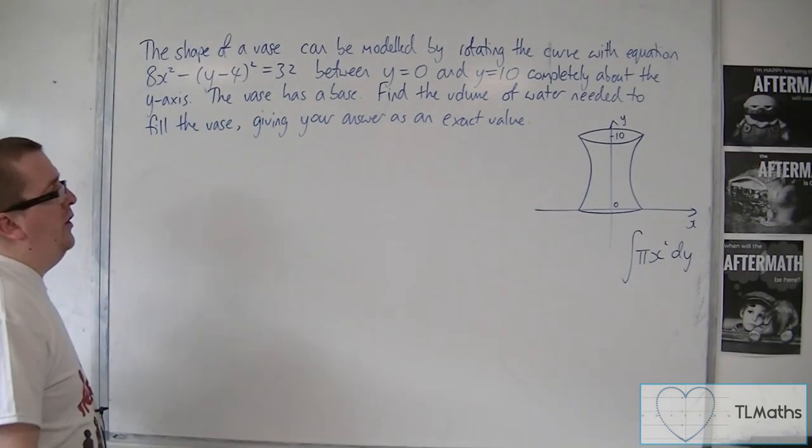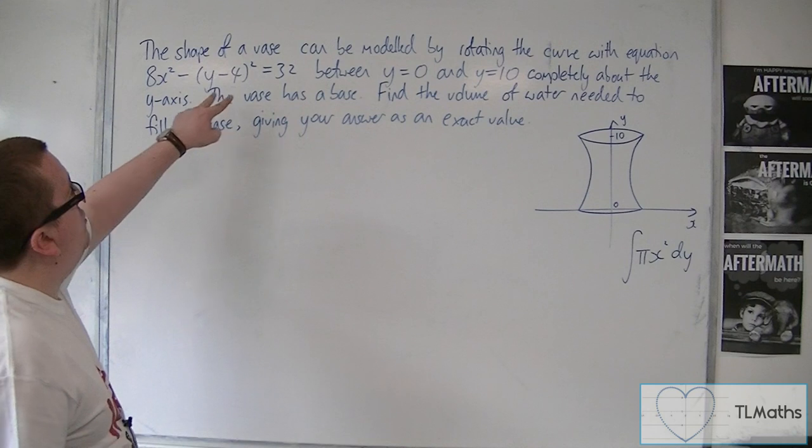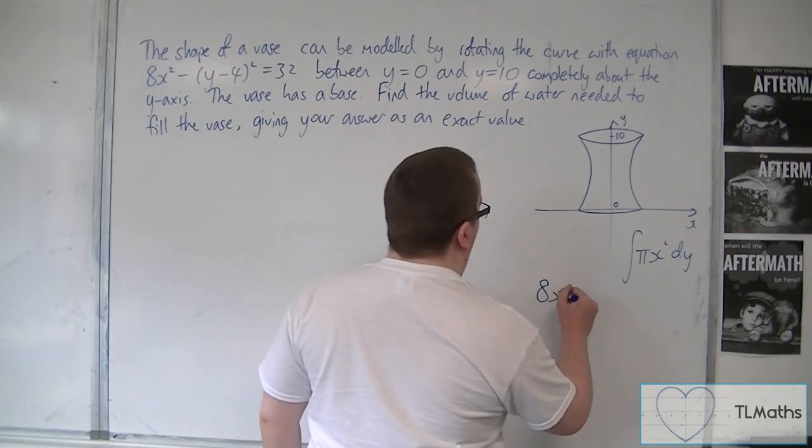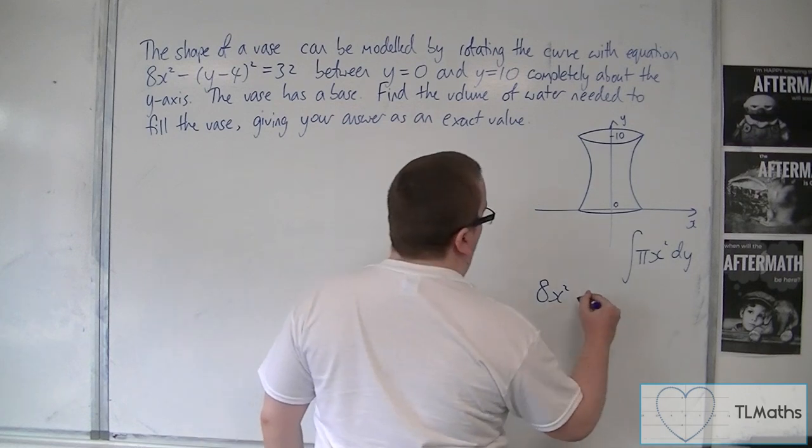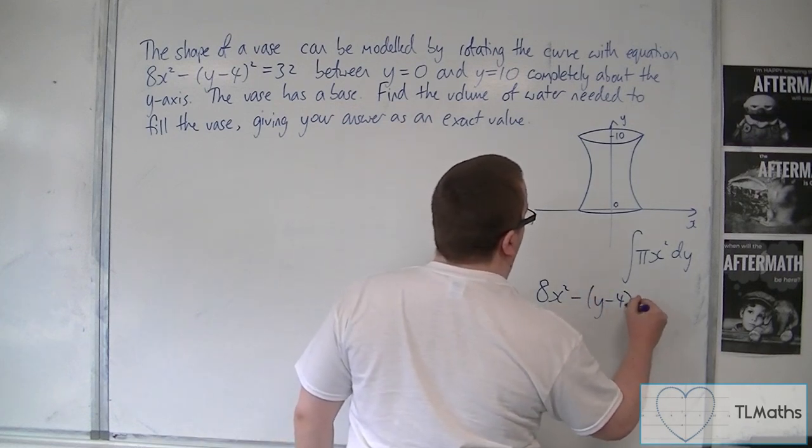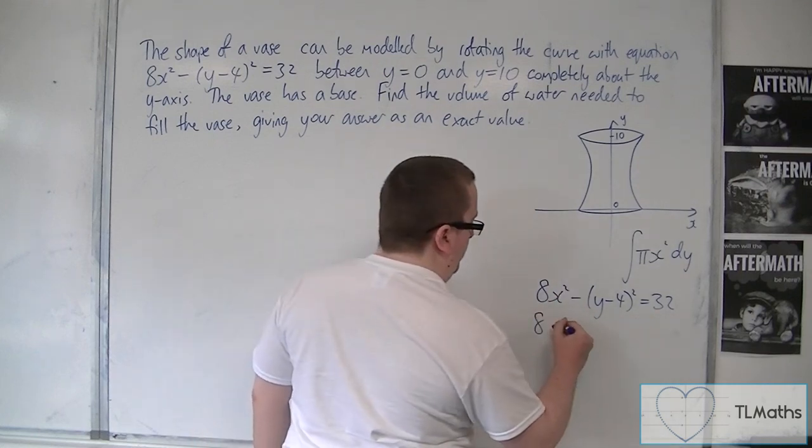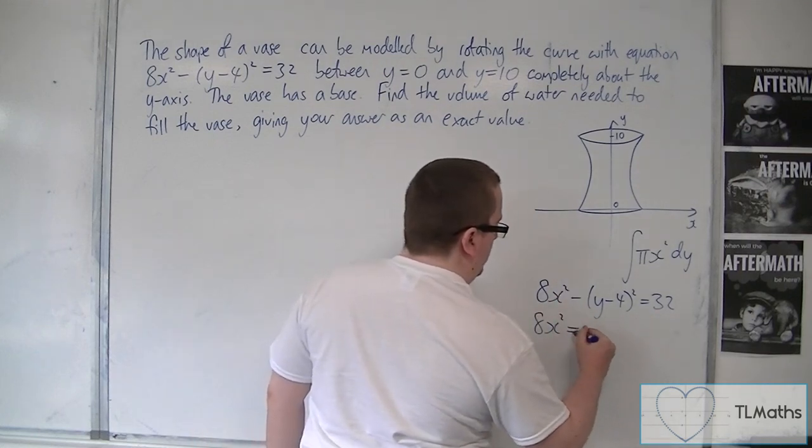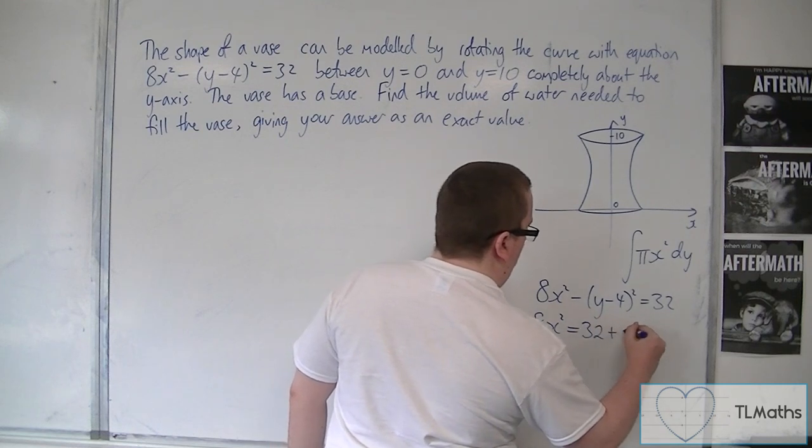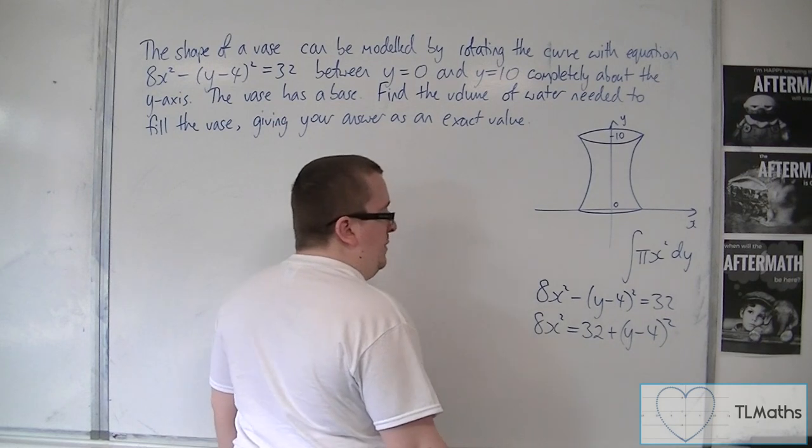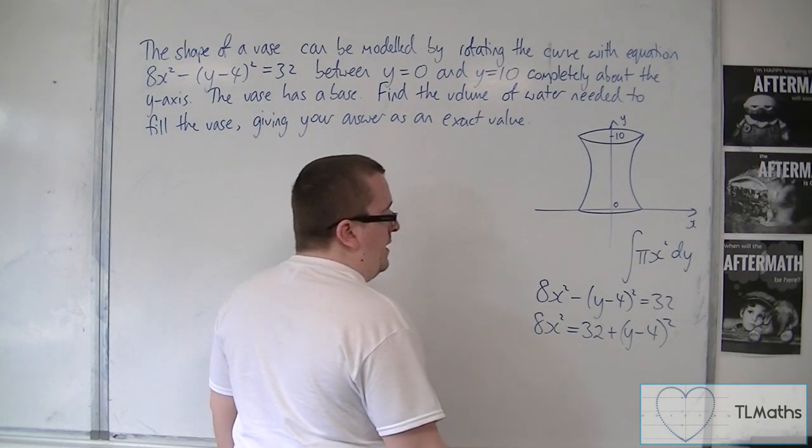So we just need to make sure we rearrange this equation into the form of x² equals. So 8x² - (y-4)² = 32. So we can add the (y-4)² to both sides: 8x² = 32 + (y-4)².